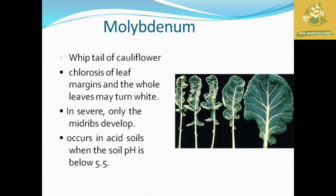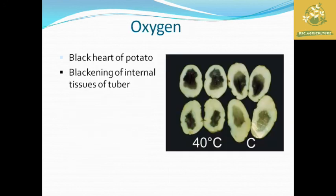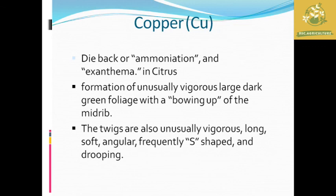Molybdenum deficiency is known as whiptail of cauliflower, where the leaf shrinks and appears like a whipped tail. Chlorosis of leaf margins occurs and whole leaves may turn white, with reduced chlorophyll. It mainly occurs in acidic soil where pH is below 5.5. Oxygen deficiency causes black heart of potato — blackening of interior tissue of tubers and hollow regions inside the potato.